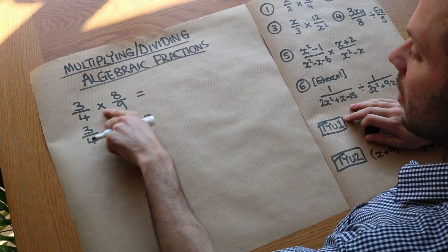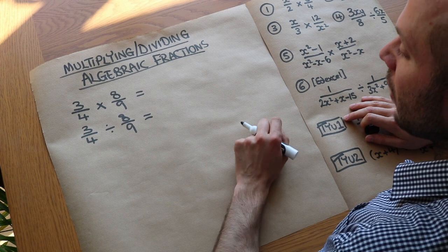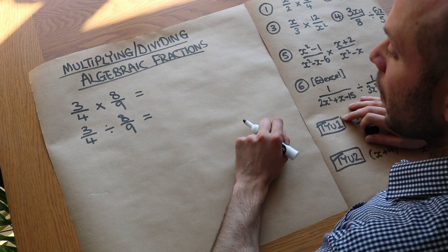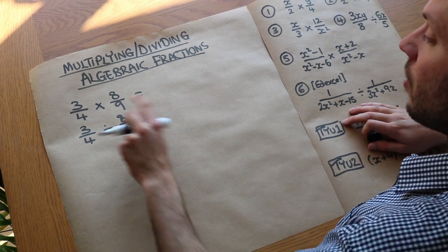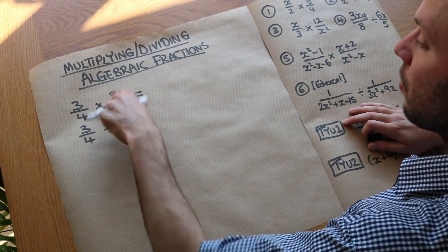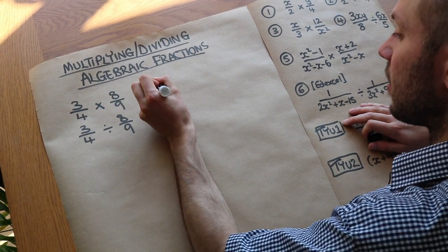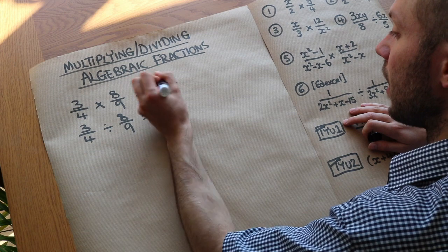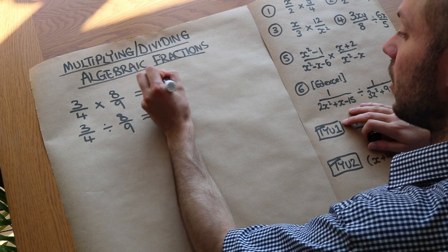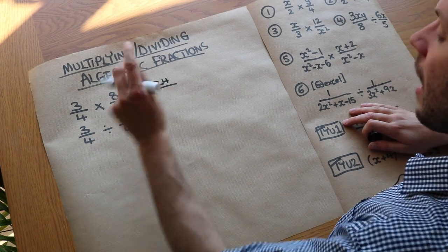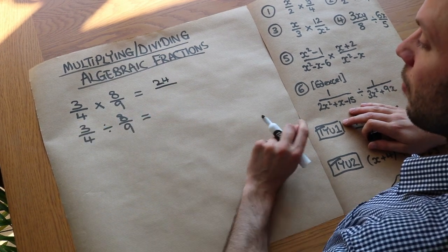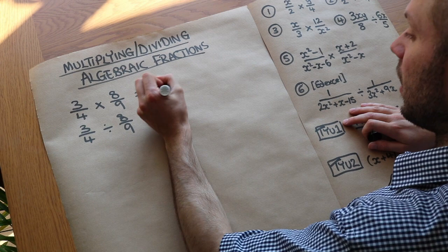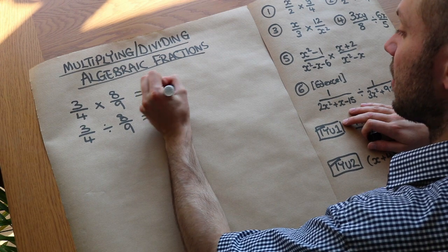If you've got 3 quarters times 8 ninths, all we need to do is multiply the numerators, so 3 times 8 would be 24. And we multiply the denominators — 4 times 9 is 36.